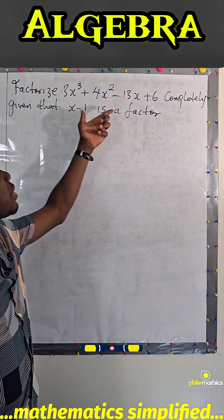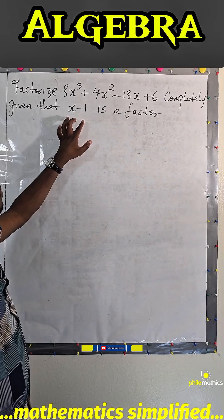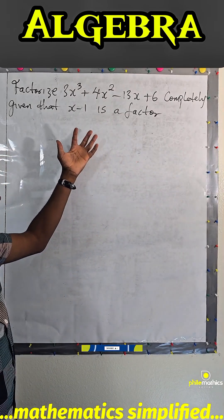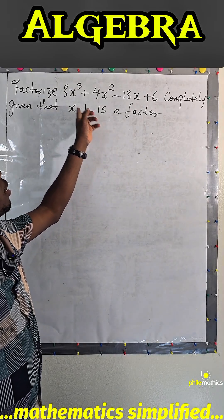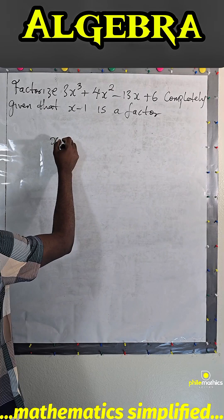How do you factorize this polynomial completely if you are given that x minus 1 is a factor? What you simply do is to do long division by dividing this by this dividend.